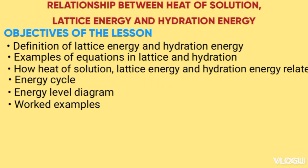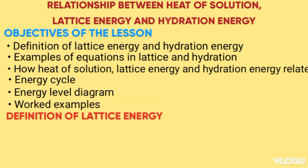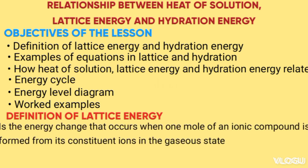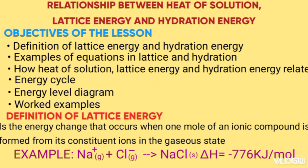We begin by looking at the definition of lattice energy. Lattice energy is an energy change that occurs when one mole of ionic compound is formed from its constituent ions in the gaseous state. Example: sodium ion (gas) plus chloride ion (gas) → sodium chloride (solid). ΔH lattice = negative 776 kilojoules per mole. We give a negative sign because when a bond is formed, heat is released, hence enthalpy change is negative.